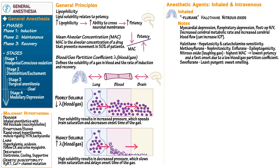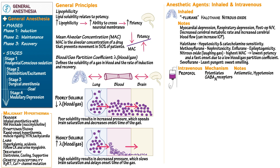Now for intravenous agents. Propofol potentiates the effects of the GABA-A receptor — remember that GABA is an inhibitory neurotransmitter. It is an anti-emetic, helping prevent post-operative nausea. It can produce marked hypotension through reduction in peripheral vascular resistance, causing cerebral hypoperfusion. It produces rapid onset and recovery of consciousness due to its lipophilicity and ability to rapidly redistribute into fat stores.